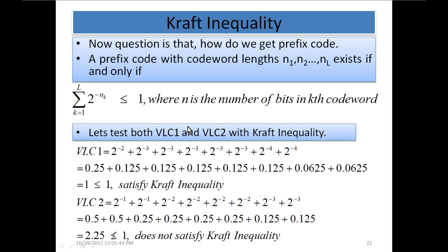The question is: how do we get a prefix code? How do we make sure the code we have generated is a prefix-free code? A prefix code or prefix-free code with codeword lengths n1, n2, ..., nl exists if and only if this condition is met: the summation from k equals 1 to l of 2 raised to the power minus n_k is less than or equal to 1, where n is the number of bits in the k-th codeword.